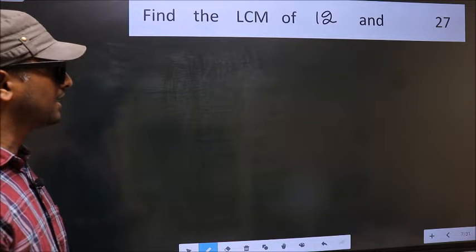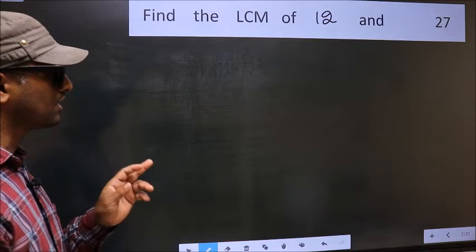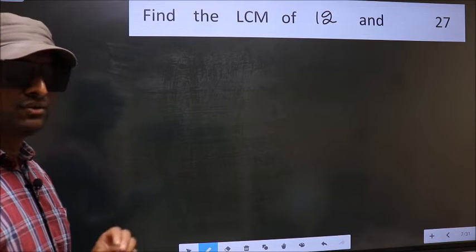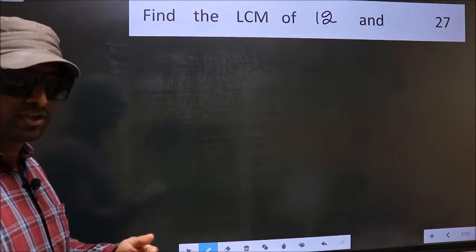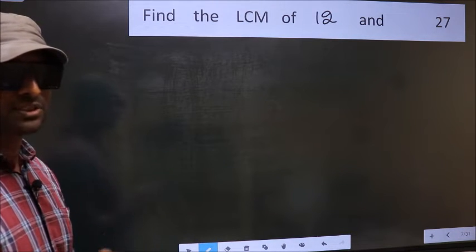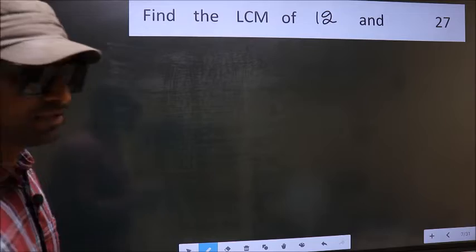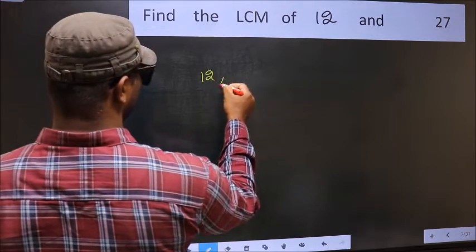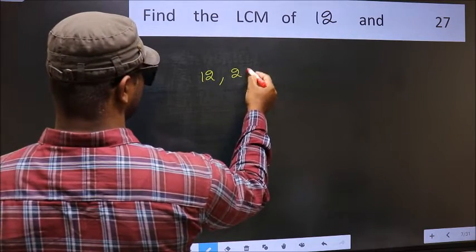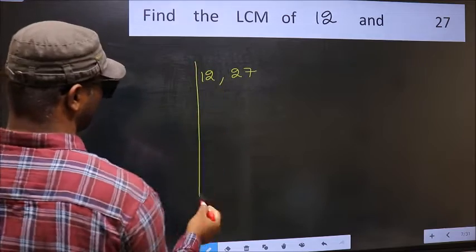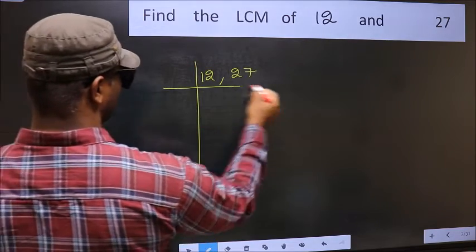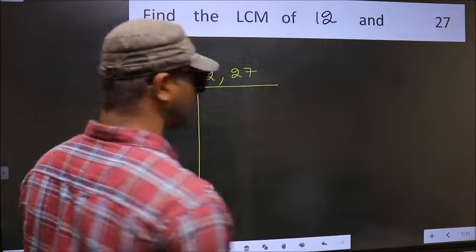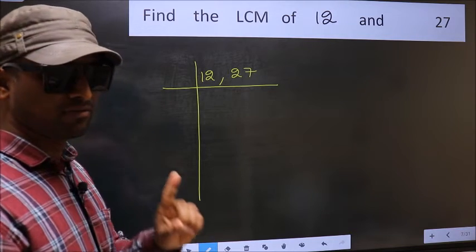Find the LCM of 12 and 27. To find the LCM, we should frame it in this way — write 12 and 27 side by side. This is your step 1.